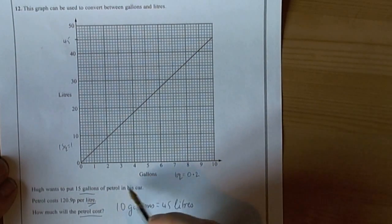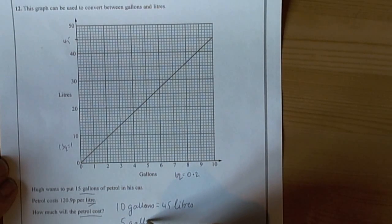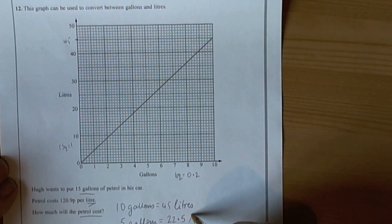Well, we want 15 gallons, so there is a nice relationship here that we could also work out what 5 gallons is. So 5 gallons would be half of what the 10 gallons conversion is, so that would be 22.5 litres.